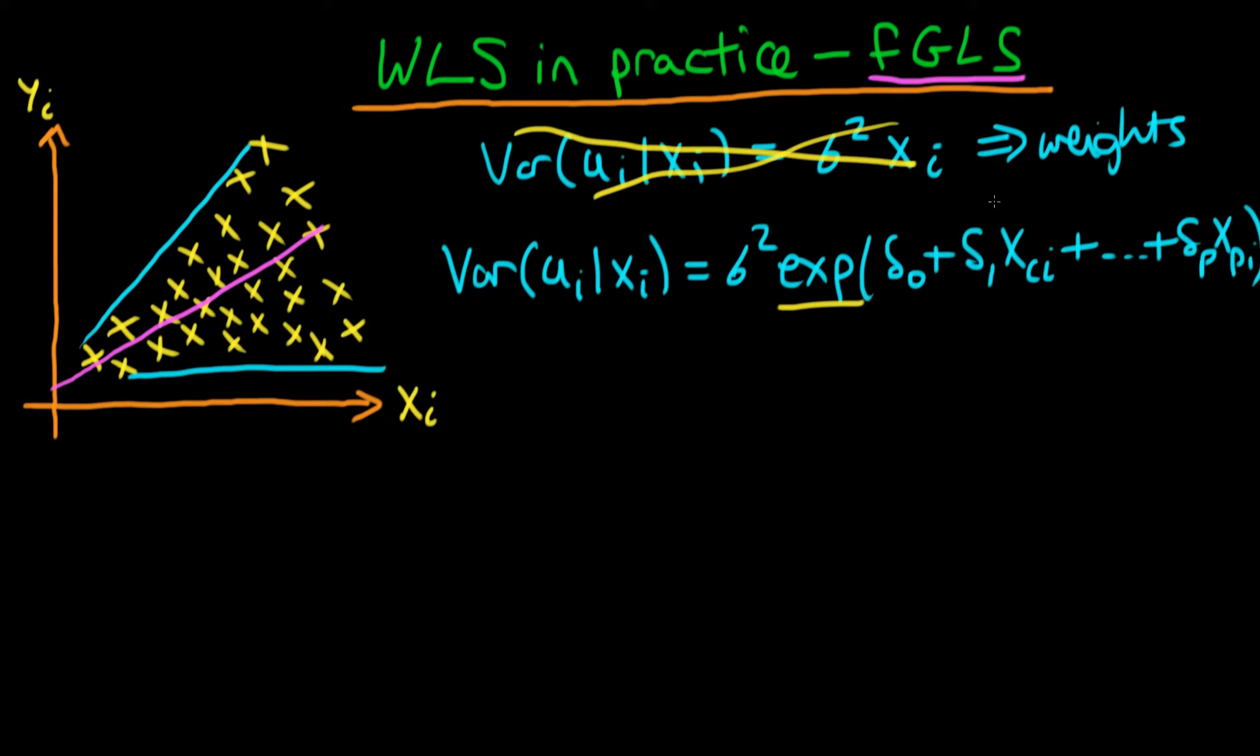It's actually because the variance can never be negative. If we just have a linear combination of xi on the right-hand side, there's nothing to stop our variance from being negative if xi is negative in this top example. Whereas in the bottom example here, there is no way that the variance can ever be negative because the exponent of any number is always greater than or equal to zero.